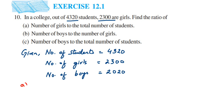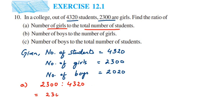Now let's find the ratios. For the first question, they are asking for the number of girls to the total number of students. The number of girls is 2300 and the total number of students is 4320. This ratio is not in reduced form, so we need to simplify it. We convert it to a fraction: 2300 divided by 4320. Canceling the zeros gives us 230 over 432.